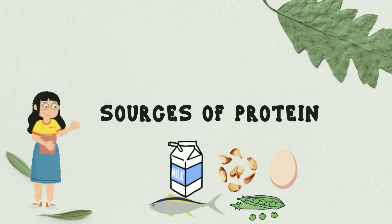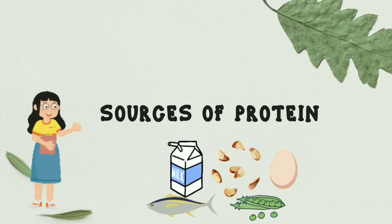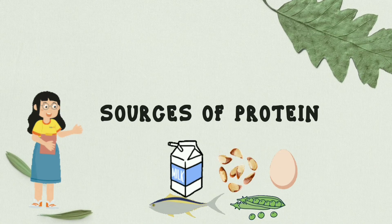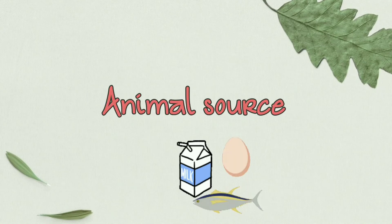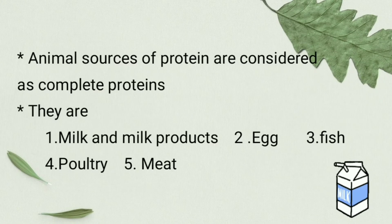Let us come to the next topic, that is sources of protein. There are many sources of protein, and protein sources can be classified into animal sources and plant sources. Animal sources of protein are considered as complete proteins, and they include milk and milk products, egg, fish, poultry and meat.